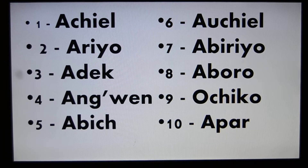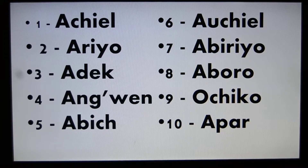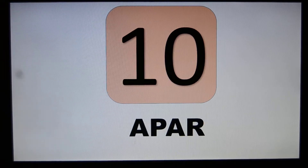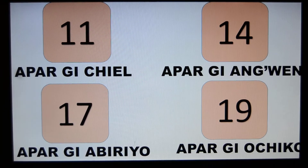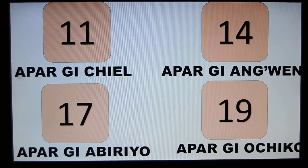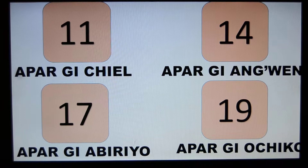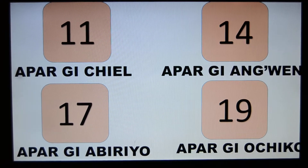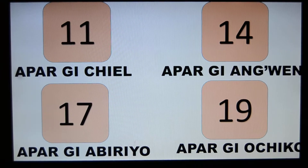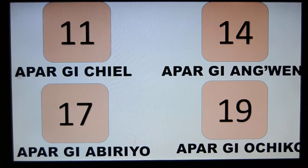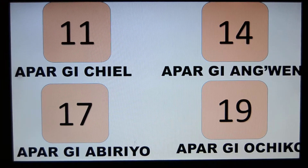APAR GI ACHIEL — that is 10 and 1, which is 11. That is the way we count from 10. So for 12 it will be APAR GI AREO, for 13 APAR GI ADEIK. For this case I just put 11, 14, 17, and 19 — that is APAR GI ACHIEL, APAR GI ANGWEN, APAR GI ABIRYO.